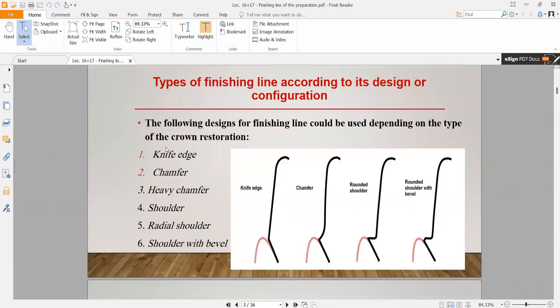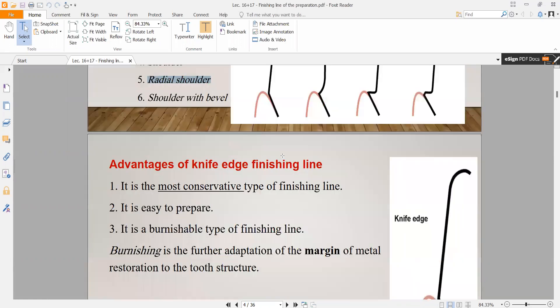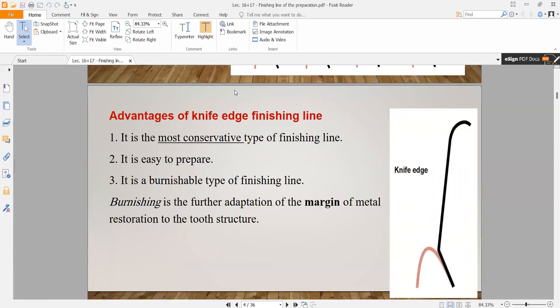Finishing line, there's some six things: shoulder, radial shoulder, bevel, chamfer, knife edge, and radial chamfer.